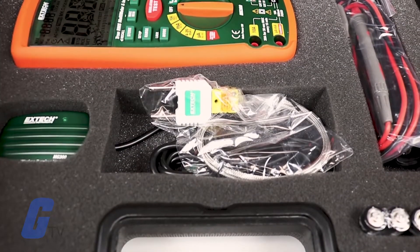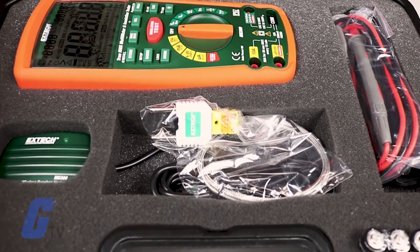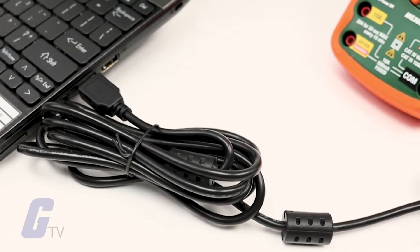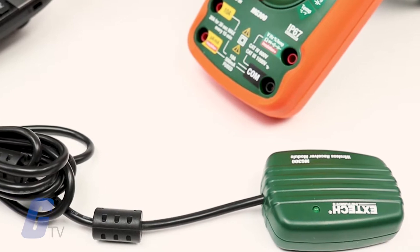The XTEX MG300 is a true RMS multimeter with a built-in insulation resistance testing feature. Additionally, it features wireless data streaming for remote monitoring and data logging.